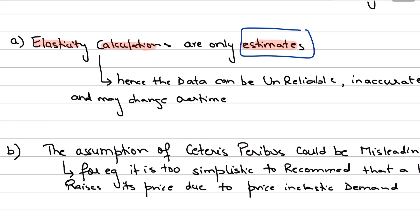We need to understand that the price elasticity of demand data, for example, may have been collected from surveys, and you can't really fully trust those surveys. Or the data might have been collected from competitor data, and the responses of that data could differ from person to person and from people to people, and they could vary.